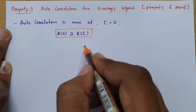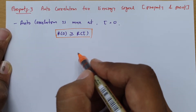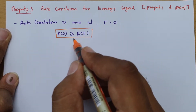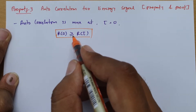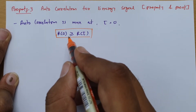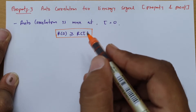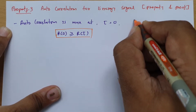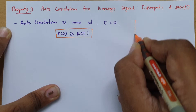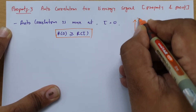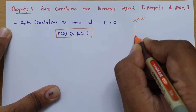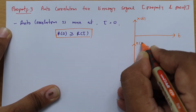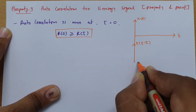Now, what is autocorrelation function? Autocorrelation function is the measure of similarity between two signals, and those two signals are one signal itself and a shifted version of that signal. So if I have one signal x(t) and a second signal x(t − τ), we are comparing the signal with its own shifted version.